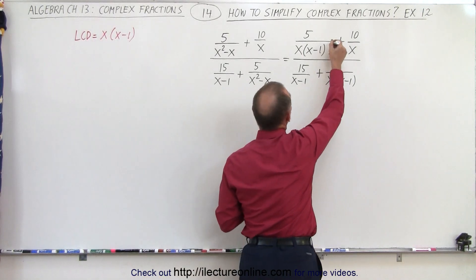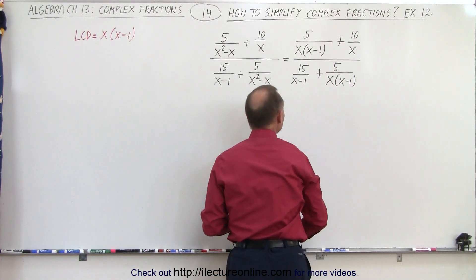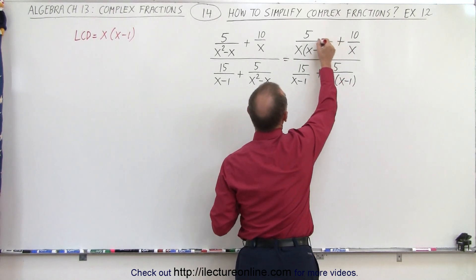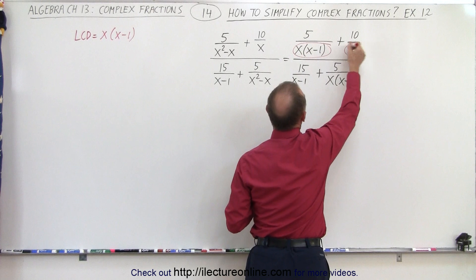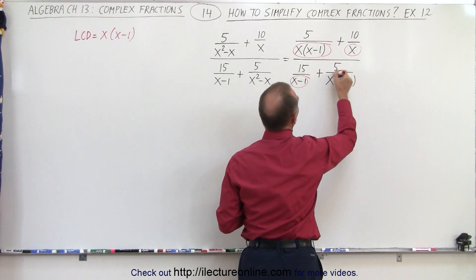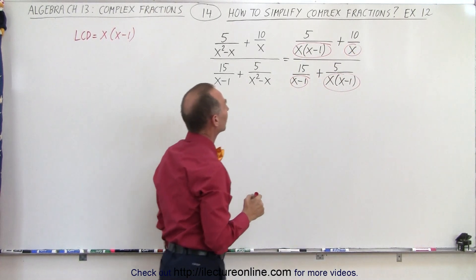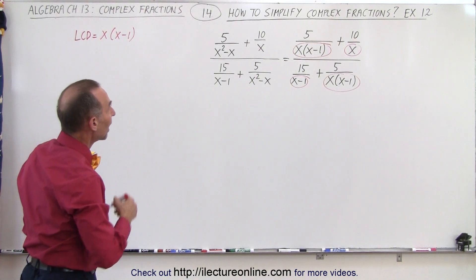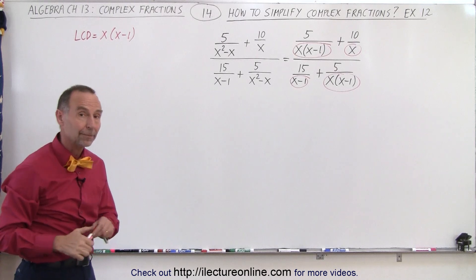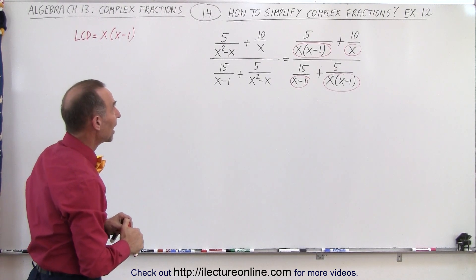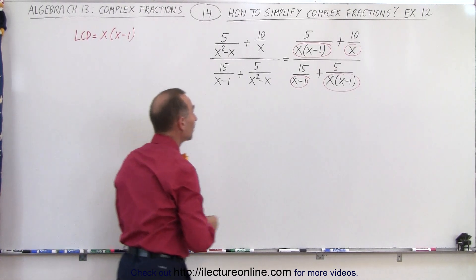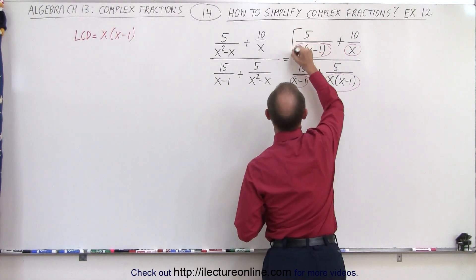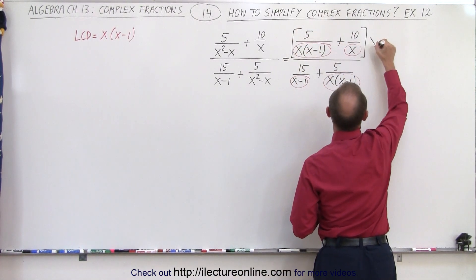Obviously, you can see that here is our first denominator, our second denominator, third, and our fourth denominator. And you can see that x times x minus 1 is indeed the lowest common denominator. Alright, now that we have that, we can then multiply both the numerator and the denominator by the lowest common denominator.